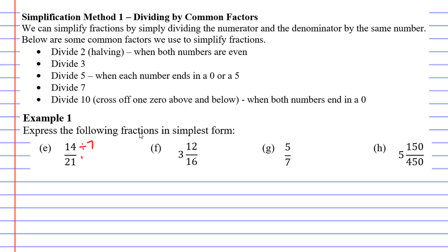Let's divide by 7, both the numerator and the denominator. 14 divide 7 is 2, and 21 divide 7 is 3. That is now in simplest form.